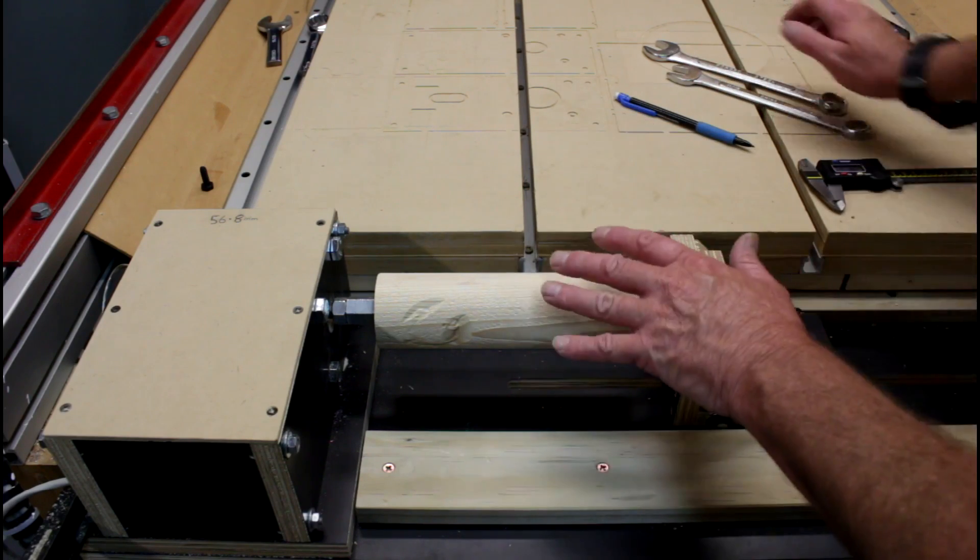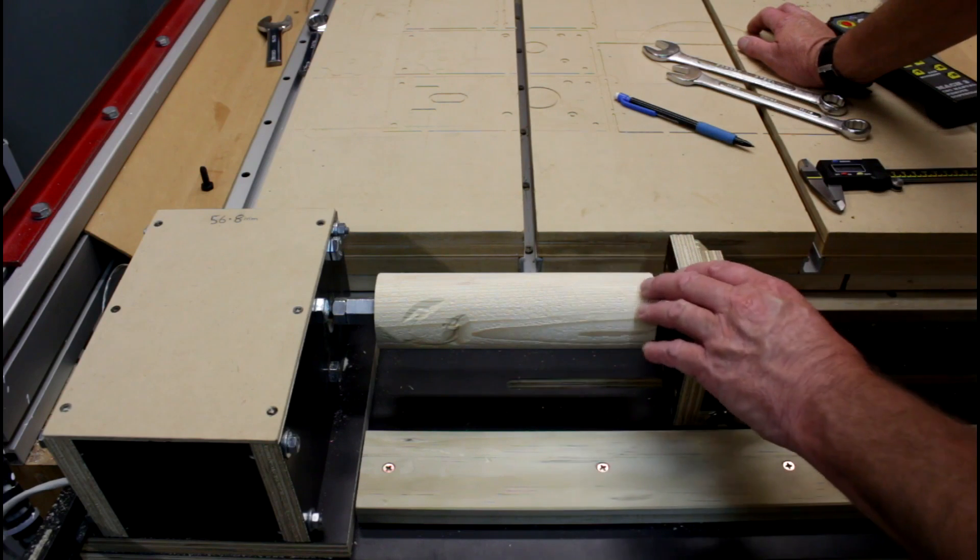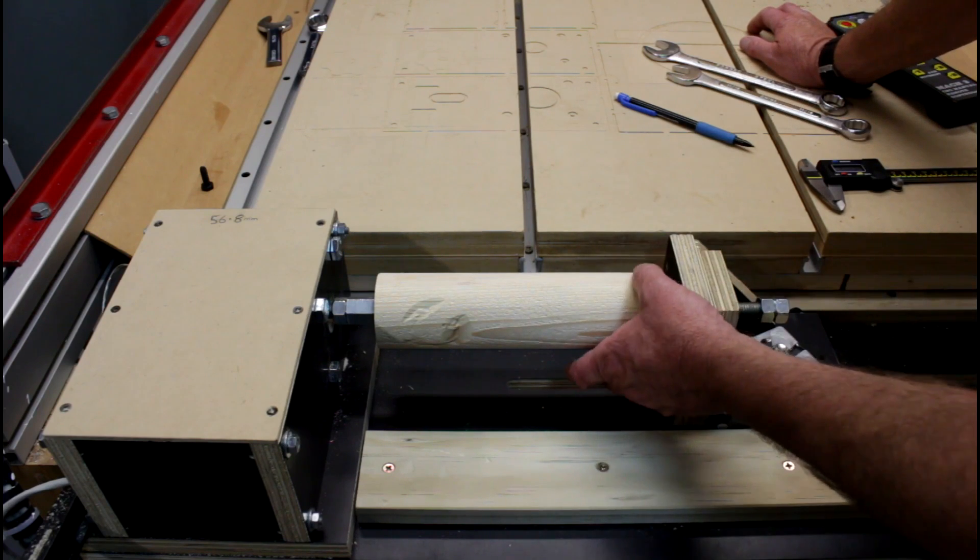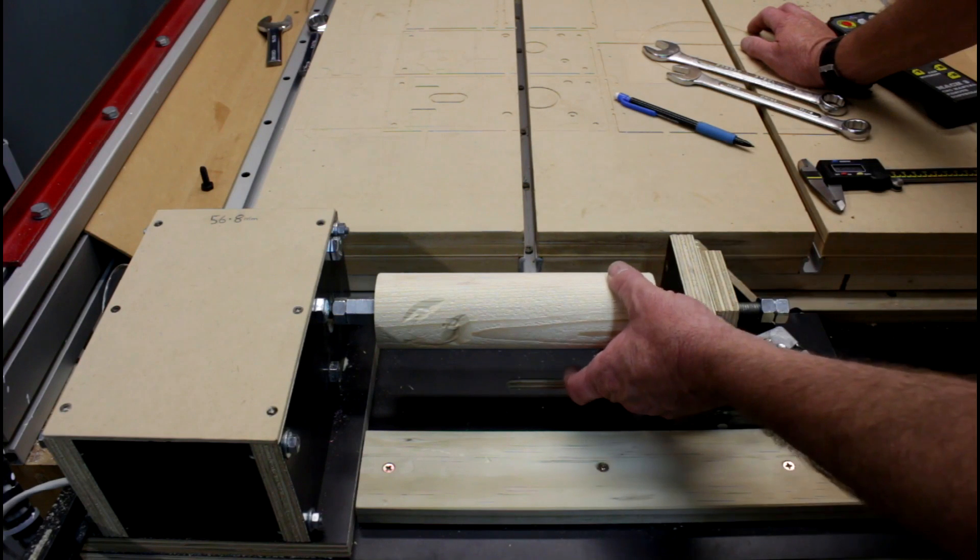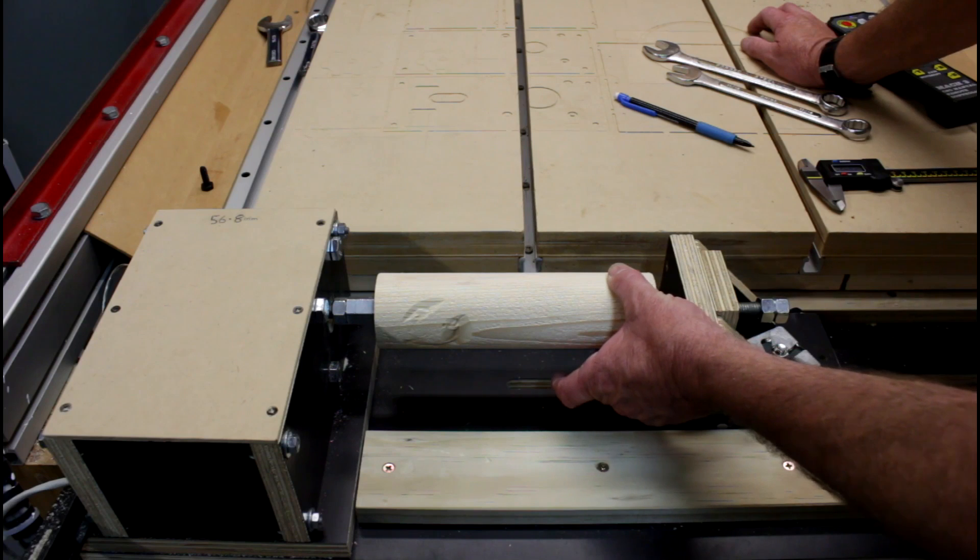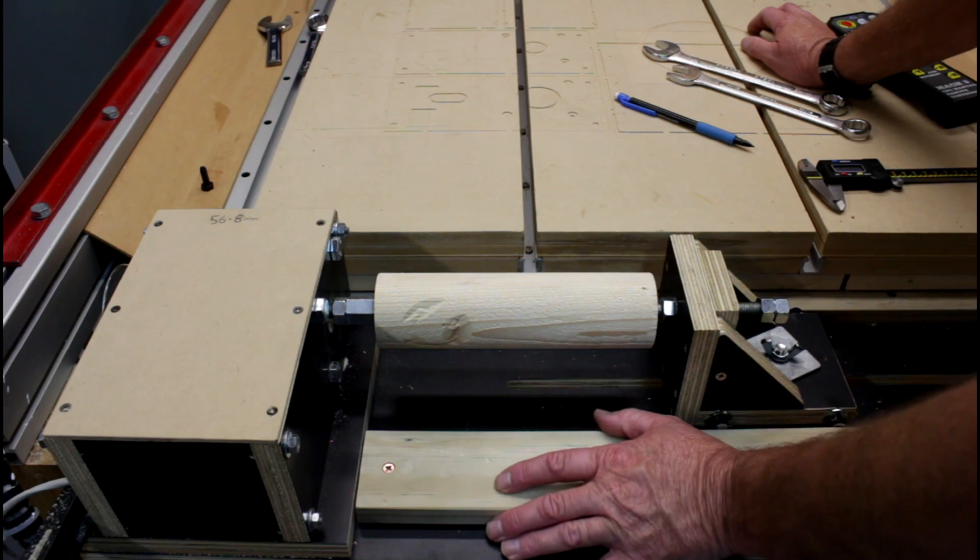because by the nature of using a lathe, any error is doubled. So if you've got a .1 of a millimeter difference, then your error is actually .05 of a millimeter difference.